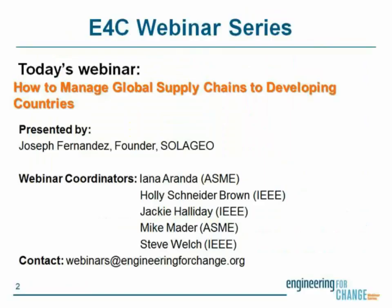Today's webinar is titled 'How to Manage Global Supply Chain for Developing Countries.' Many of E4C's members reach out with poverty-alleviating product ideas and questions about taking those products from concepts to launch, scaling up manufacturing, and procuring goods from global suppliers. There are recognized challenges with global logistics management in the emerging markets where we work in Asia, Africa, or Latin America. We've invited the founder of Trade Without Borders, or TWB, Joseph Fernandez, to shed light on getting solutions to the last mile. TWB specializes in trading services for global suppliers and local organizations within underserved communities and has developed the Solangeo platform to expand clean energy access.